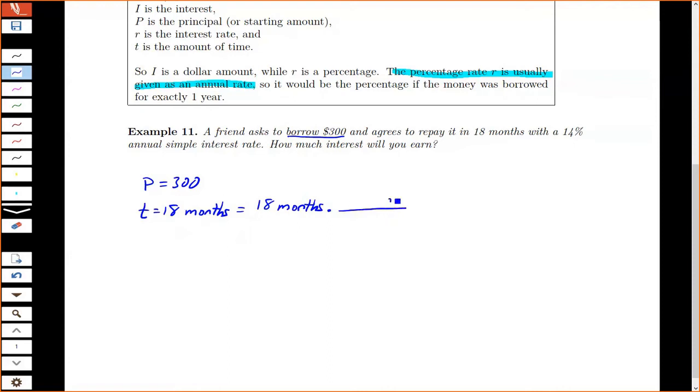And for my units, I want to end up with years and get rid of months. So one year and 12 months are the same. So this will cancel out my months. And then I have 18 divided by 12. You can leave it as a fraction or you can write it as a decimal.